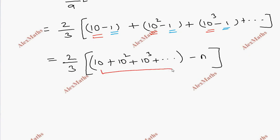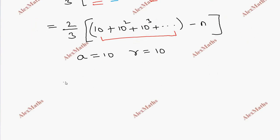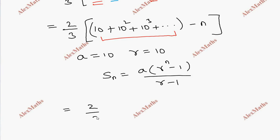For the geometric progression part, first term a = 10, common ratio r = 10. Using the GP sum formula: S_n = a(r^n − 1)/(r − 1). So the answer is (2/3) × [10 × (10^n − 1)/(10 − 1)] − n.